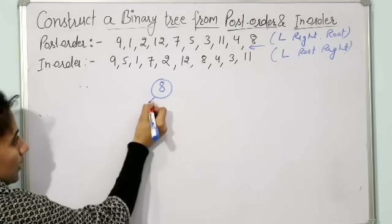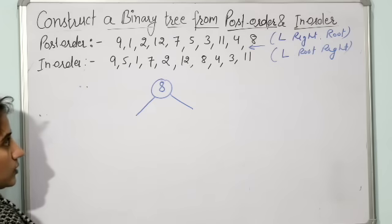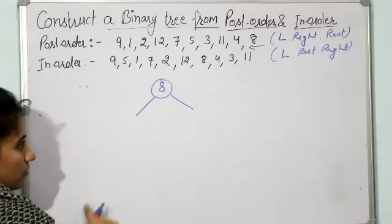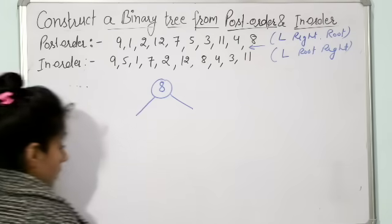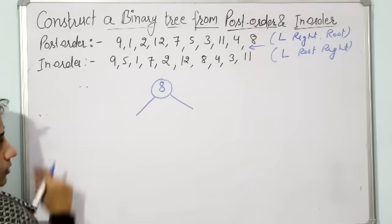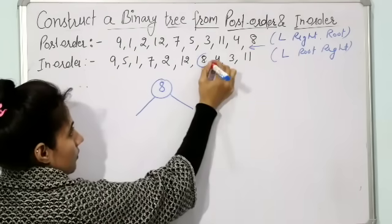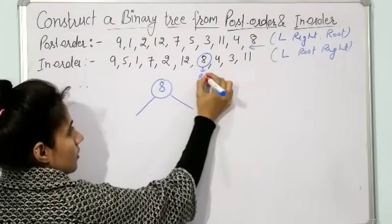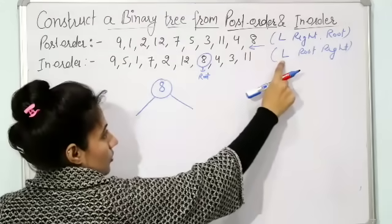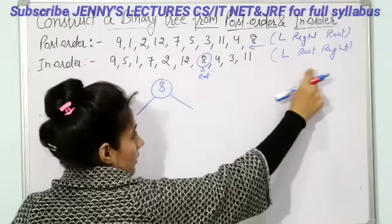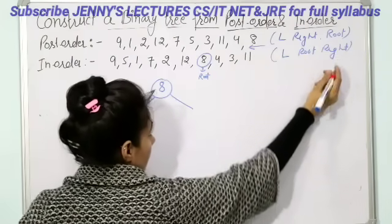Now find out the elements to the left of 8 and the elements to the right of 8 — that is, the elements of the left subtree and the elements of the right subtree. To find out the left and right subtrees, go to the in-order traversal and locate 8. All elements to the left of root 8 form the left subtree, and all elements to the right form the right subtree.